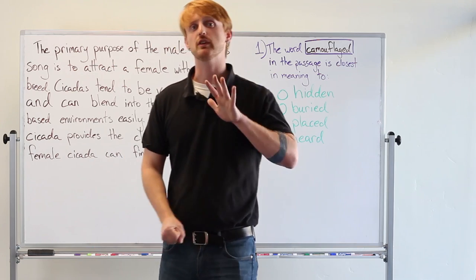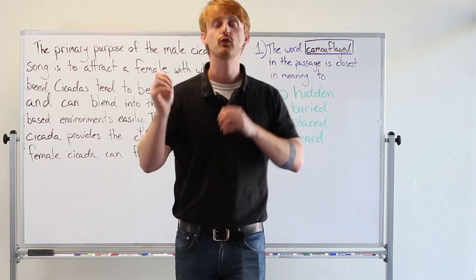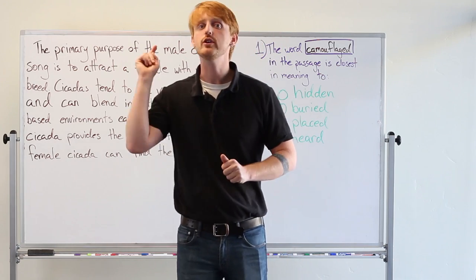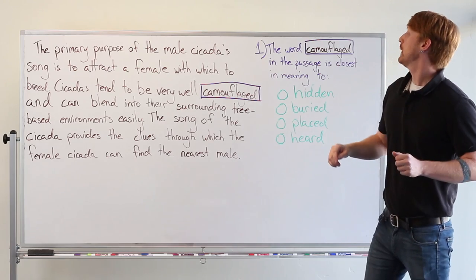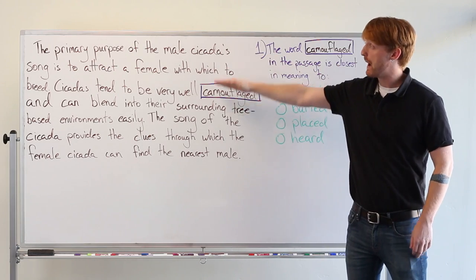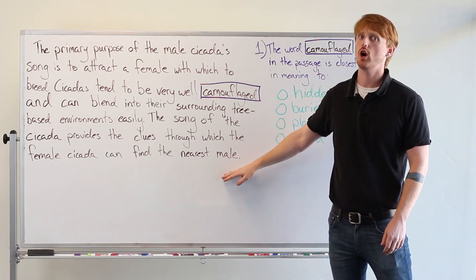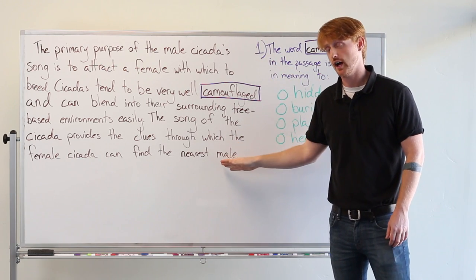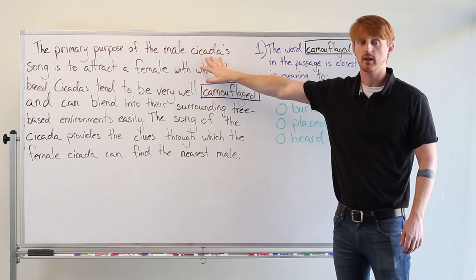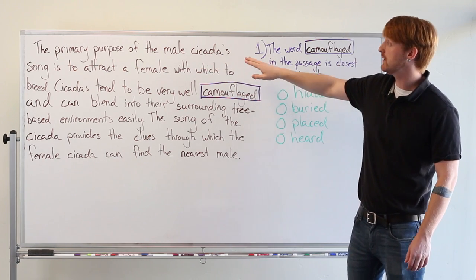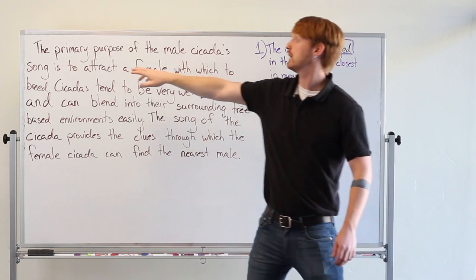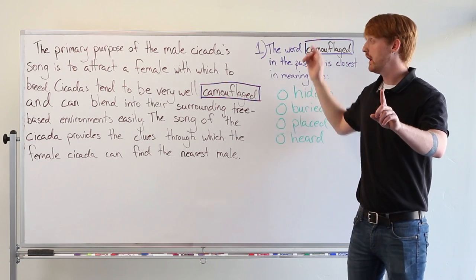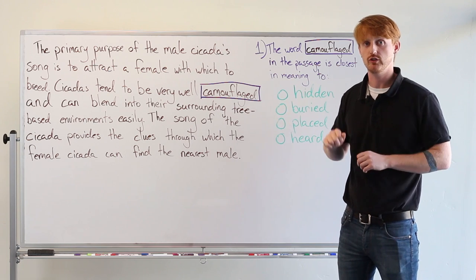Now let's look at a specific question so we can see the format of those vocab questions, what they look like, and how you answer them. We have here a paragraph of a much longer text — actually, it's the first half of a paragraph about cicadas, a type of insect. This is specifically about the cicada's song. If you want to read this, I would pause the video now, read it, and then we will talk about the specific question.